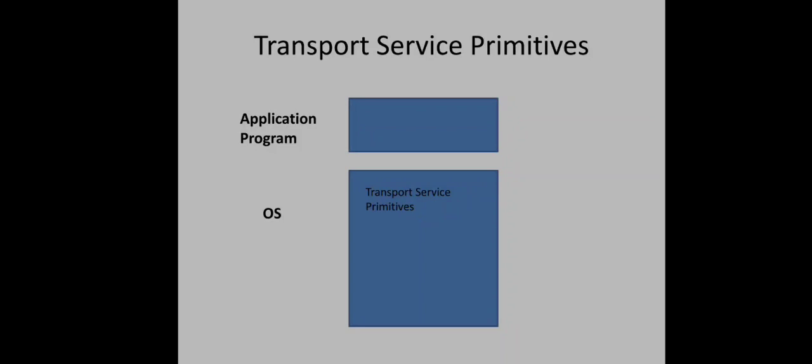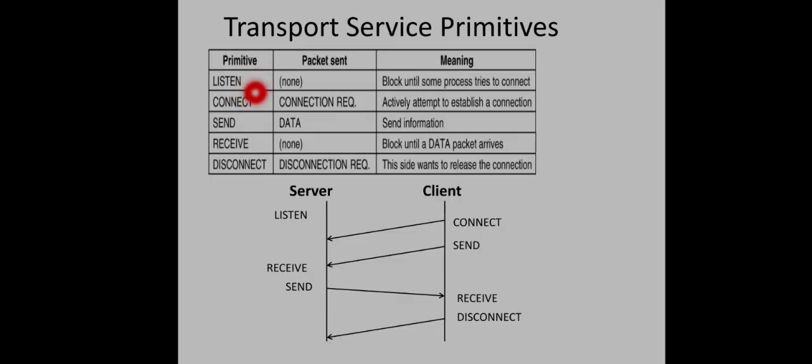Through these primitives, the user program can access the services provided by the transport layer, and once data is handed over to the transport layer, the rest is handled by it. First, we will see a set of primitives in a hypothetical protocol to understand how it works, then move to TCP. These primitives are: listen, connect, send, receive, and disconnect. We use a client-server model — for example, a browser accessing a web server.